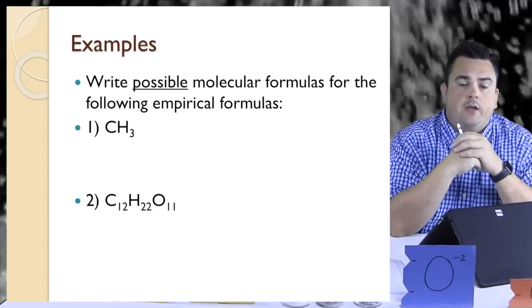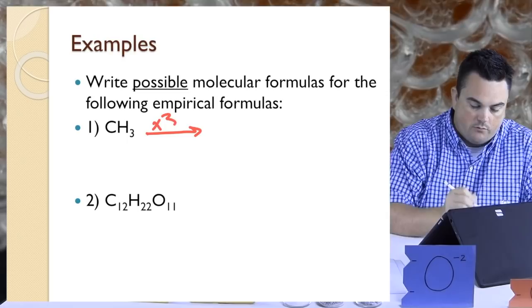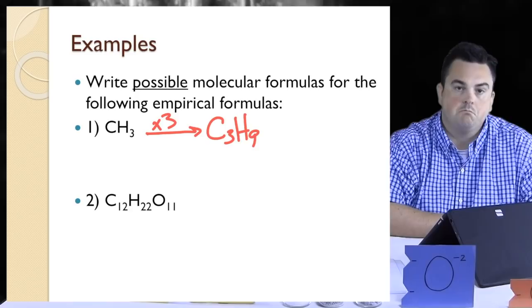So CH3, I'm going to pick 3. I'll multiply it times 3. So that means there'll be 3 carbons, C3, and 3 times 3 is 9, so H9. And again, it's a possible molecular formula. Maybe it's a real molecule, maybe it's not. It came from the empirical formula, which was already reduced.